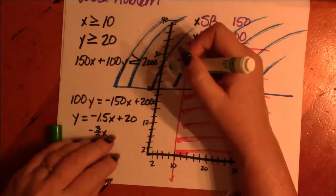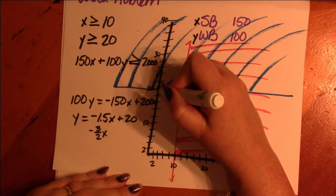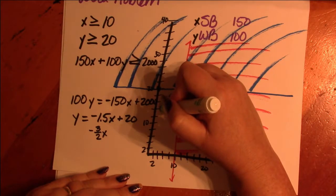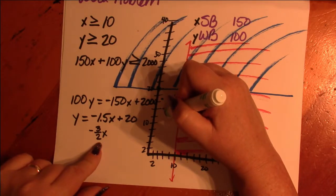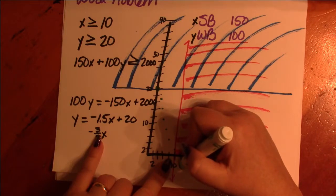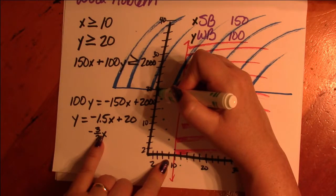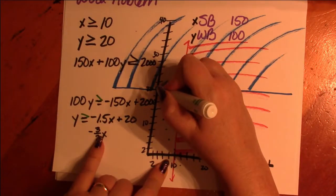So we're going to start at 20. And we're going to go down 3 and over 2. Down 3 and over 2. And we're going to end up with, down 3 and over 2 is somewhere over there. So it looks like this and that is a solid line.